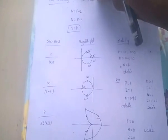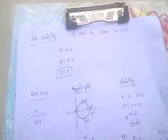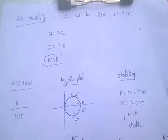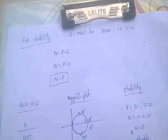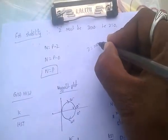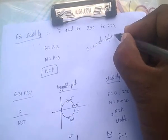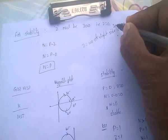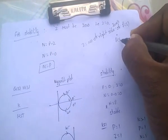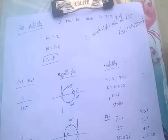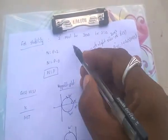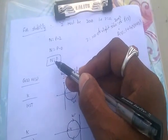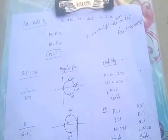The condition for stability is Z must be 0. Z is the number of right-side zeros of F(S), where F(S) = 1 + G(S)·H(S). We know N = P - Z. For stability, Z = 0 means N equals P — the number of encirclements must equal the number of right-side poles of F(S).